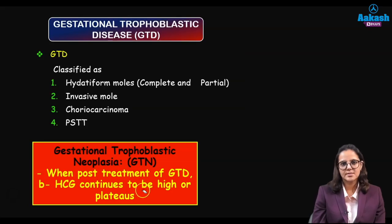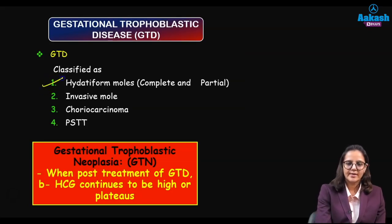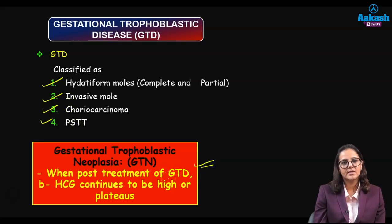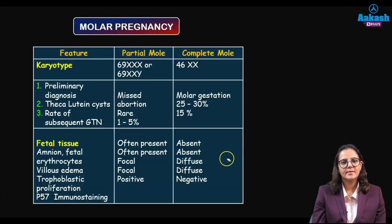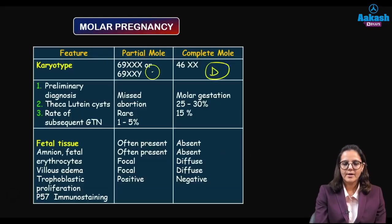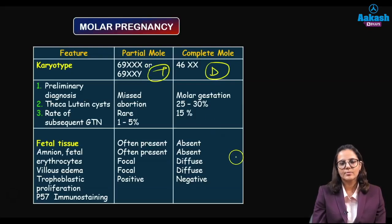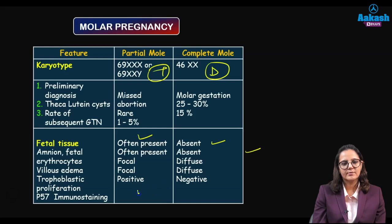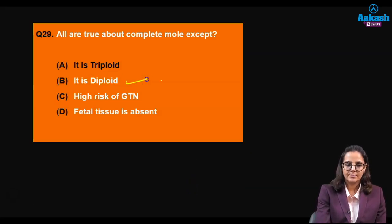What is gestational trophoblastic disease? It comprises hydatidiform moles (complete or partial), invasive mole, choriocarcinoma, and placental site trophoblastic tumor. GTN is diagnosed when beta-hCG remains high or plateaus after treatment. Comparing complete and partial moles: complete mole is diploid, partial mole is triploid. There are increased chances of carcinomatous change in complete mole. Fetal tissue is absent in complete mole but may be present in partial mole. P57 immunostaining is positive in partial mole and negative in complete mole.